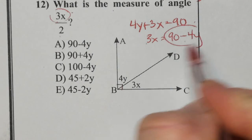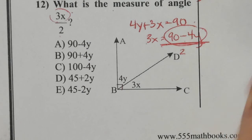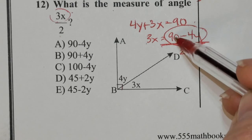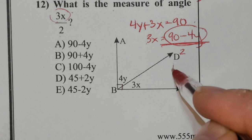But I want to take not just what 3x is, I want to divide that by 2. This 2 has to both be divided by the 90 and the 4y, so 90 divided by 2 is 45.